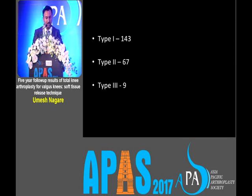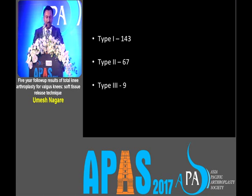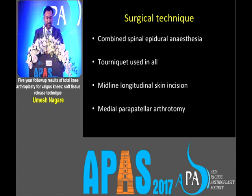In type 1 deformity of the Runout classification, we had 143 patients. Type 2, we had 67 patients, and type 3, we had 9 patients.